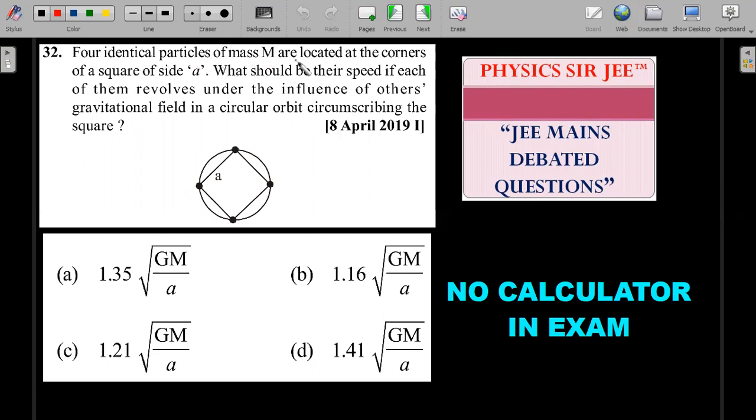Four identical particles of mass M are located at the corners of a square of side A. What should be their speed if each of them revolves under the influence of the other's gravitational field in a circular orbit, circumscribing the square. That is straightforward, four particles are there, they're rotating in a circle, and that is a circumcircle of this particular square. You're supposed to calculate the speed of each one so that they are rotating under the gravitational influence. And you could see the square root of GM by A, capital G is the universal gravitational constant.